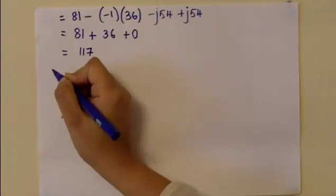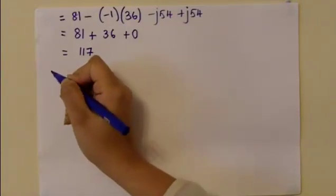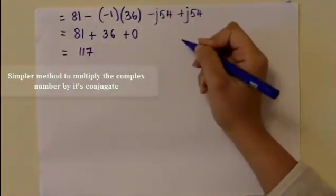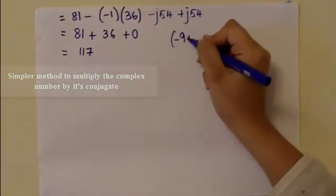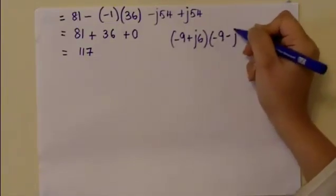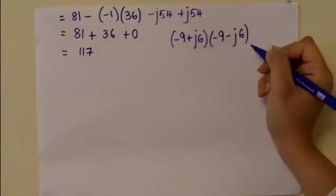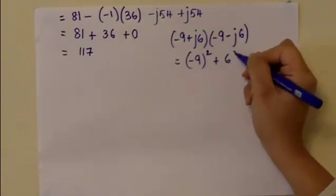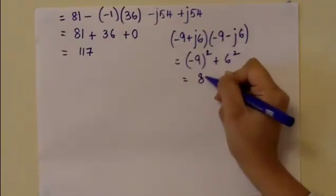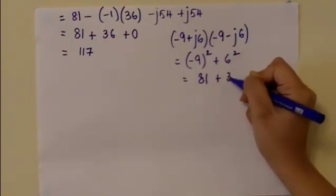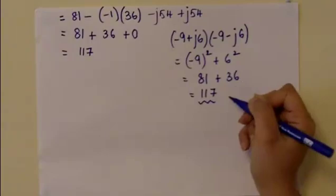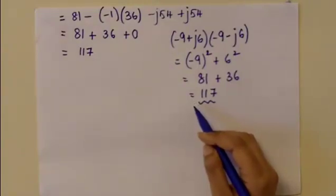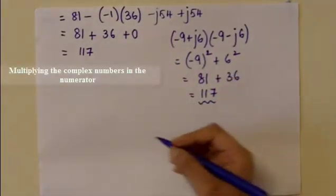When you multiply a complex number by its conjugate — in this case (-9 + j6) times (-9 - j6) — instead of going through the long multiplication method, you can simply compute (-9)² + 6² = 81 + 36 = 117, which gives the same answer. We can adopt this shortcut method instead of using FOIL.